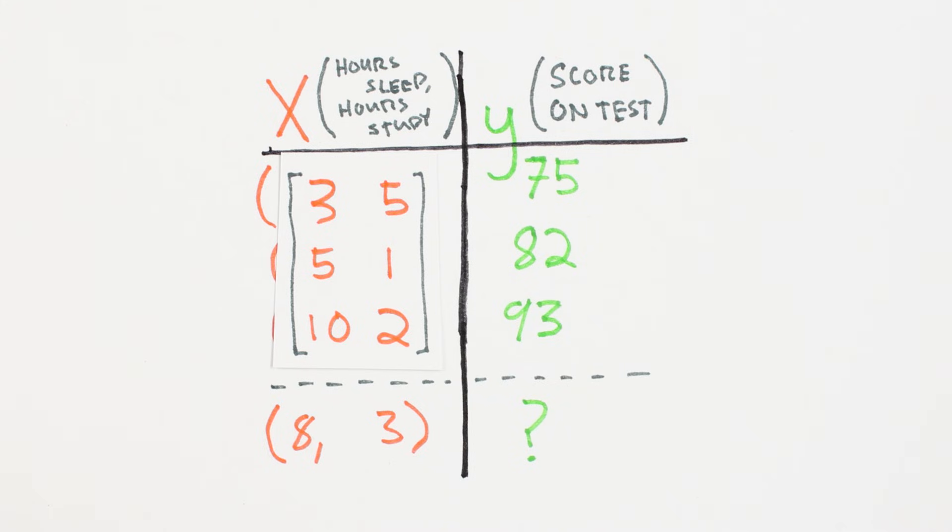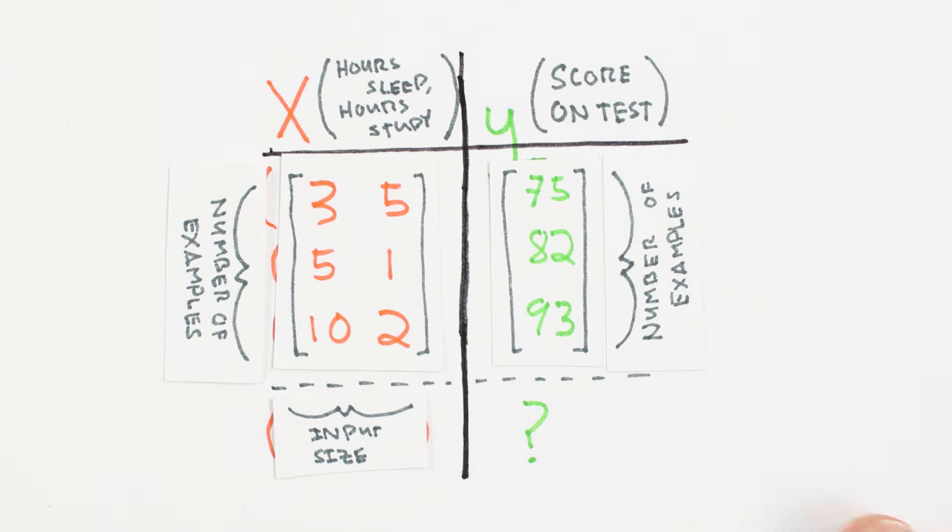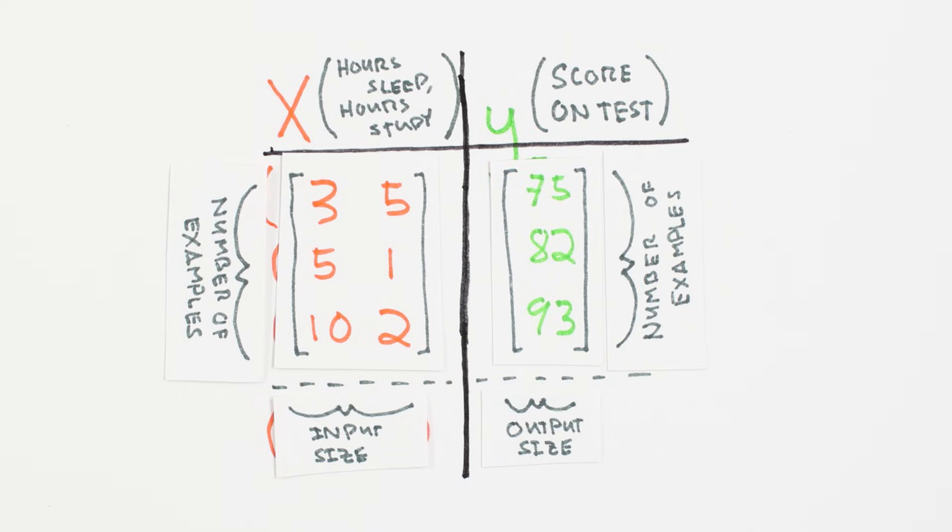Our input data matrix, X, is of dimension three by two, because we have three two-dimensional examples. Our corresponding output data, Y, is of dimension three by one.